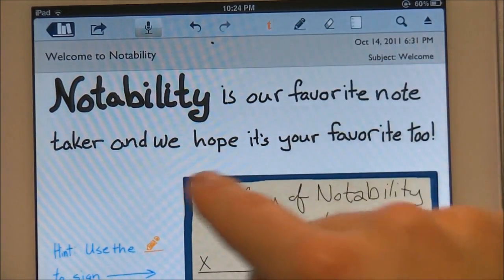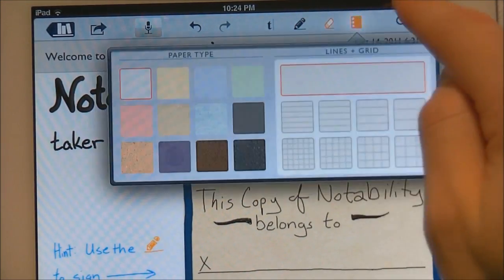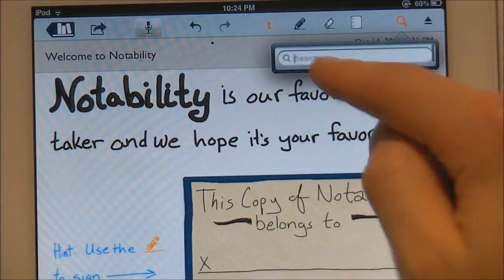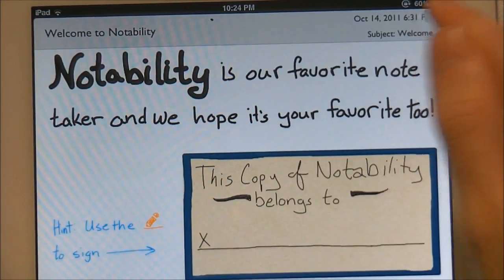You have your text button if you want to type somewhere, your pencil button, your eraser, your paper style and paper color, and you can search inside of your notes, and this takes away the toolbar.